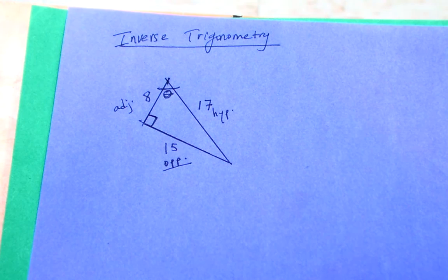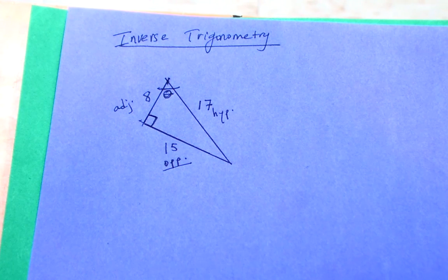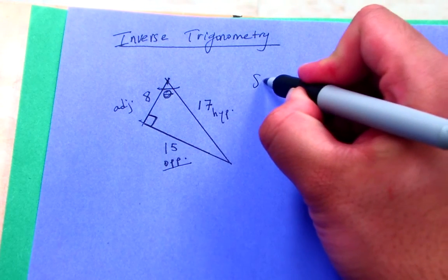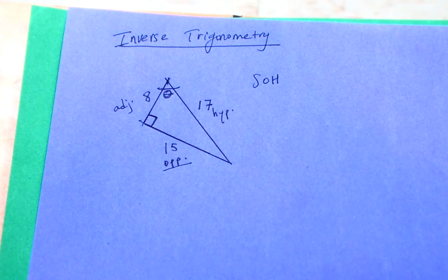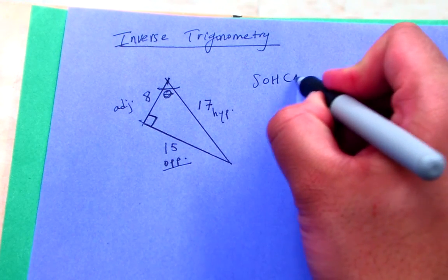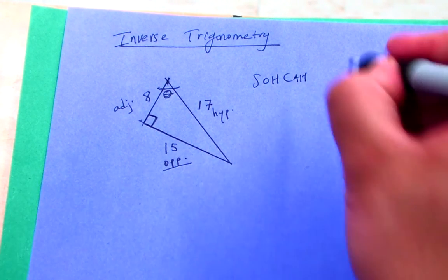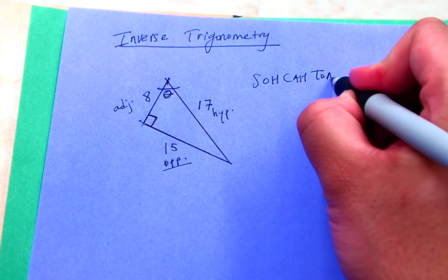So really I can pick any combination that I wish, whether it's sine, cosine, or tangent, because whether I look at opposite hypotenuse, I've got both of those. Whether I look at adjacent hypotenuse, I've got both of those. And if I look at opposite adjacent, I have both of those as well.